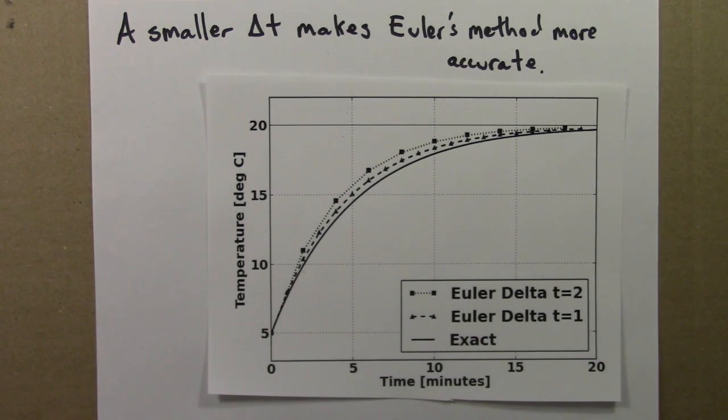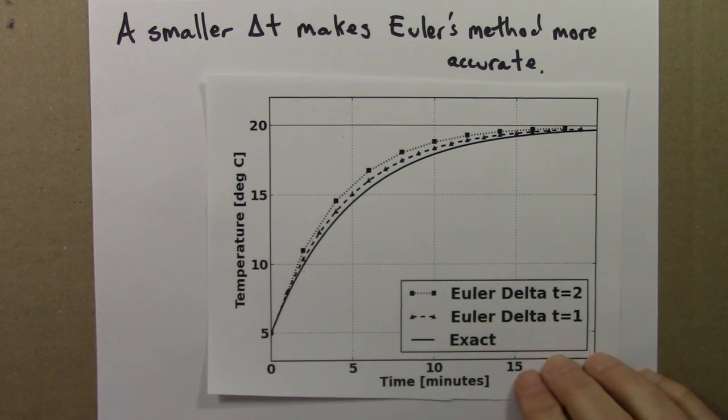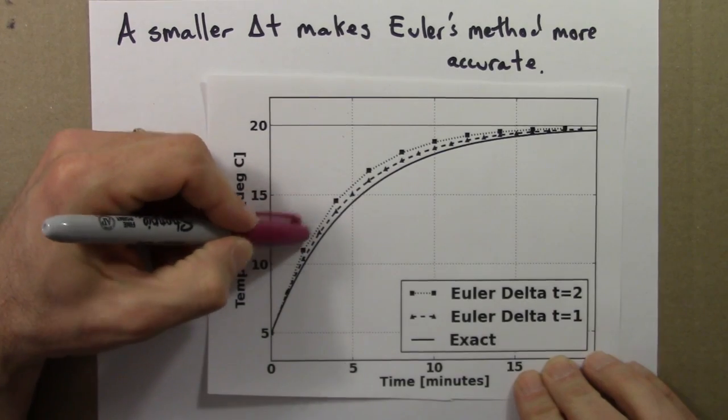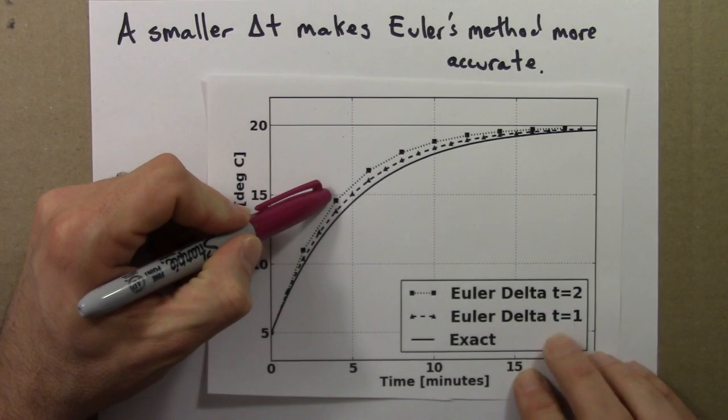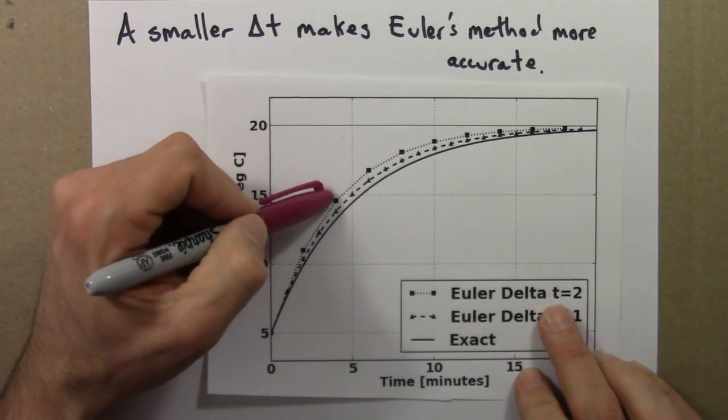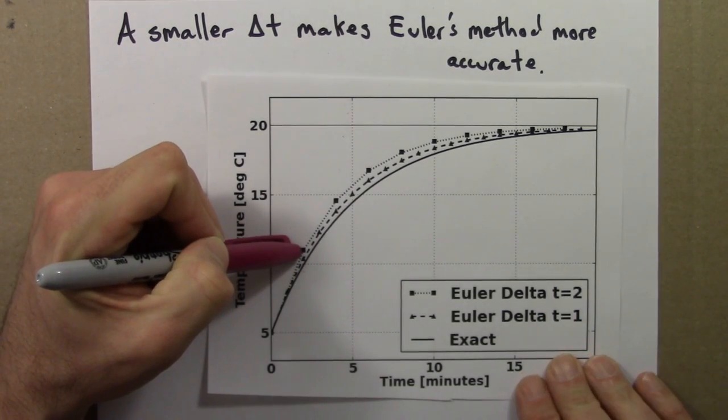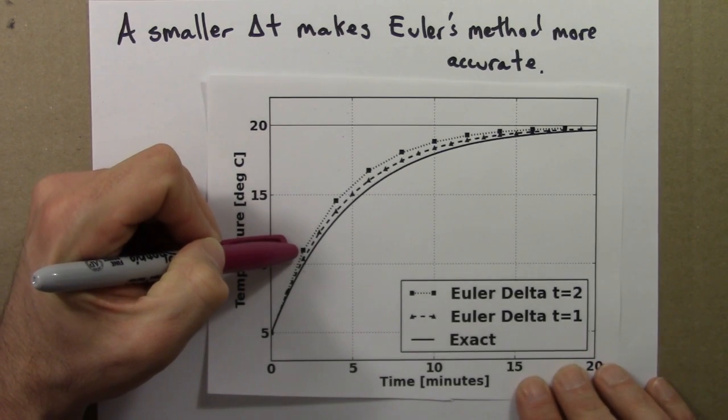So first, the squares, which we've already seen, we calculated those before. That's Euler's method with a delta t of 2, where we're pretending that a constantly changing rate is actually constant for a whole 2 minutes.